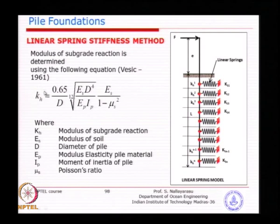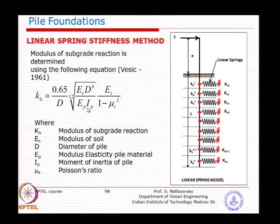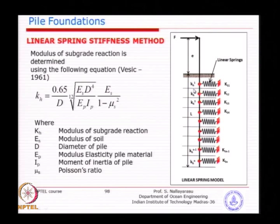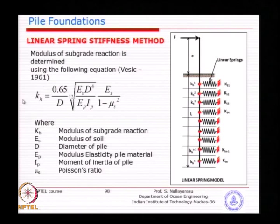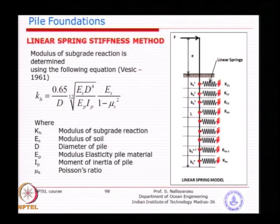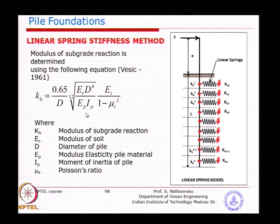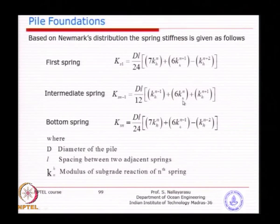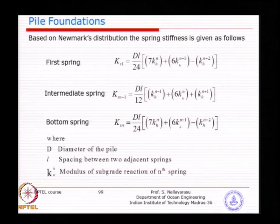The resistance against pile movement is offered by the soil depending on the type of pile and its flexibility or rigidity together. If you have multi-layered soil, for each layer you have values of ES, Poisson's ratio of soil, pile stiffness Ep (modulus of elasticity of pile), Ip (moment of inertia of pile cross section), and pile diameter. Everything is available for each layer so you can calculate the KH value.